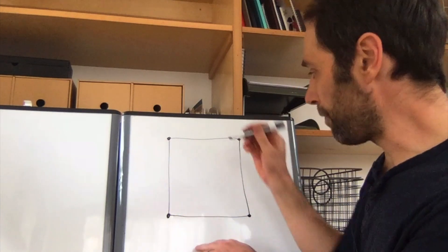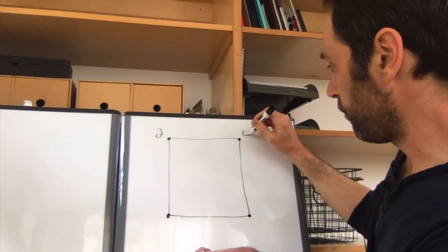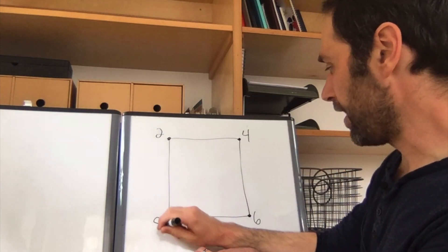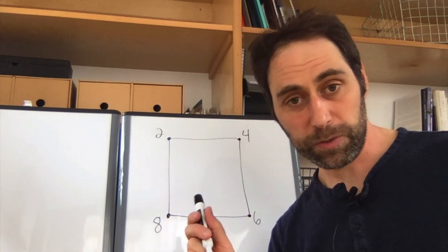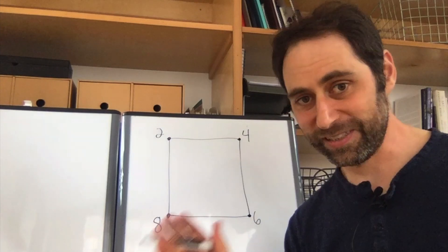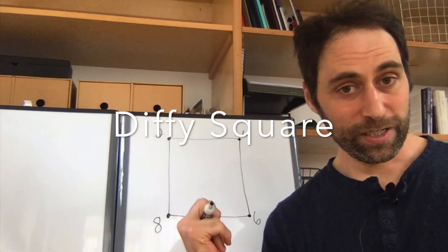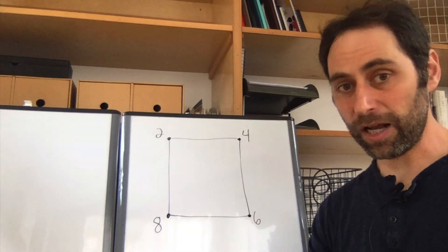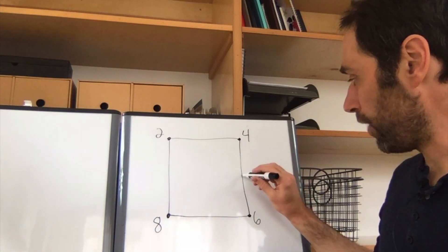For now I'll pick two, four, six, and eight as my numbers. So once you have four numbers picked, this thing will start. This is called a Diffie Square. The reason it's called the Diffie Square is we start with a square and then we're going to find the differences — the positive differences. We pick a point right in the middle, the midpoint of each side.